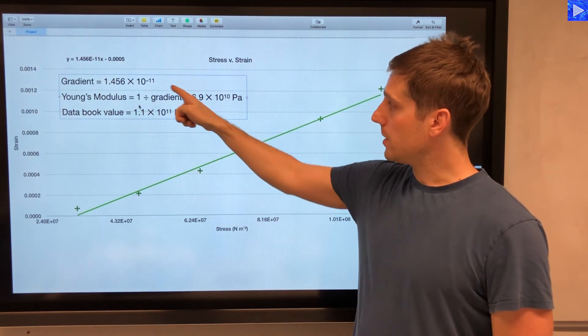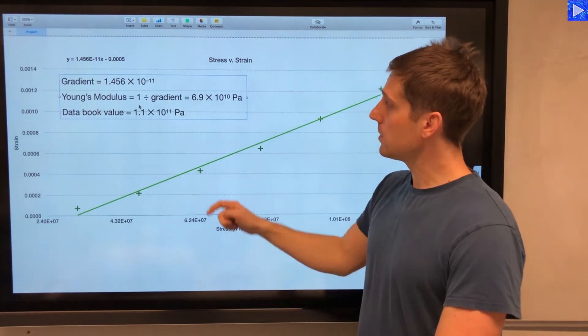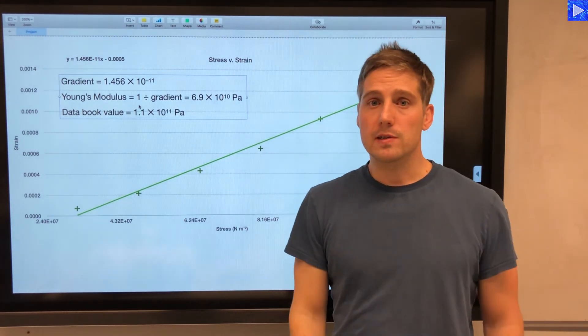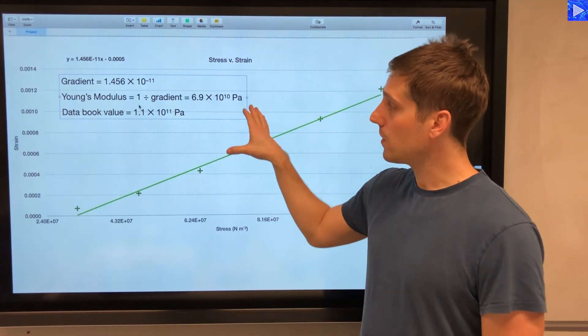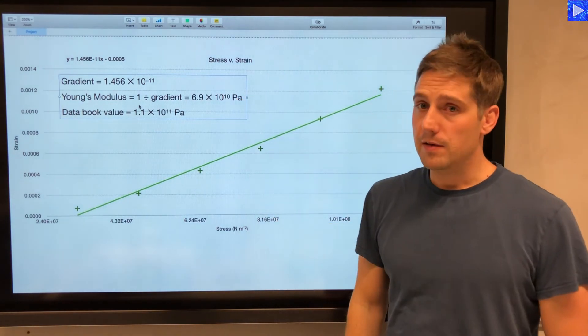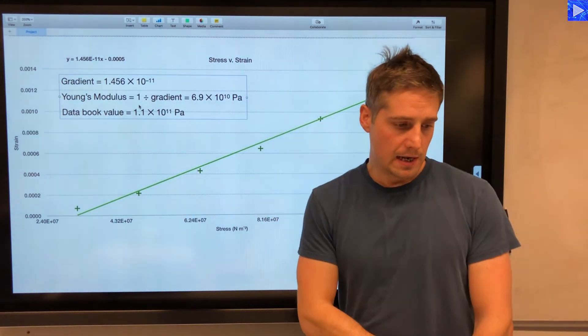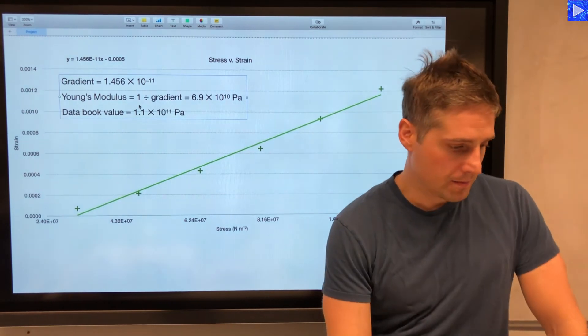So 1 divided by 1.456 times 10 to the minus 11 gives me 6.9 times 10 to the power of 10 pascals. So Young's modulus for this metal wire was 6.9 times 10 to the 10 pascals.